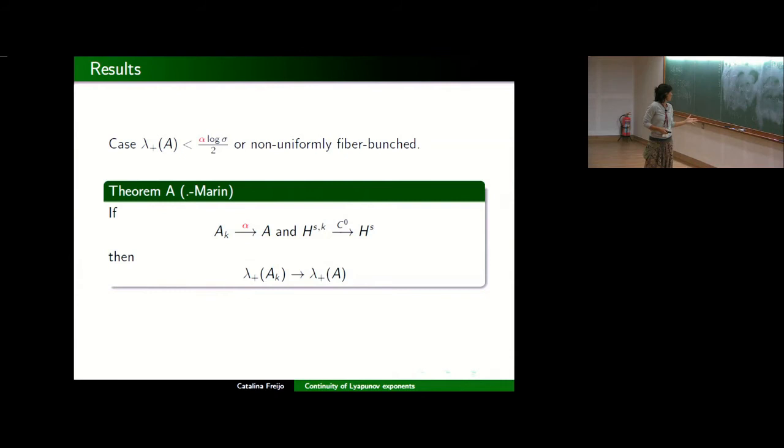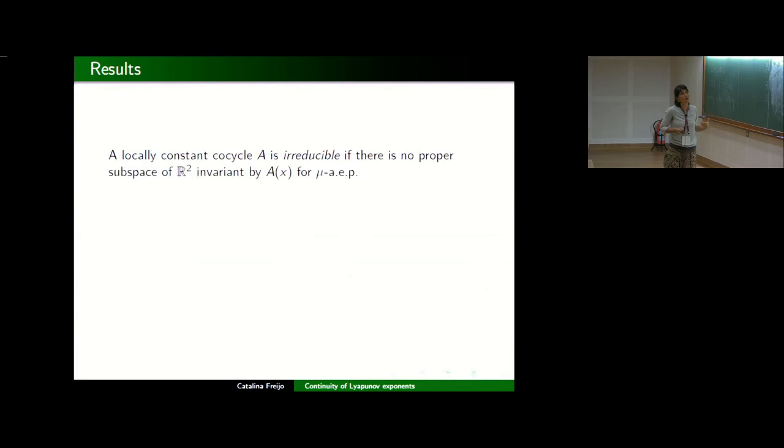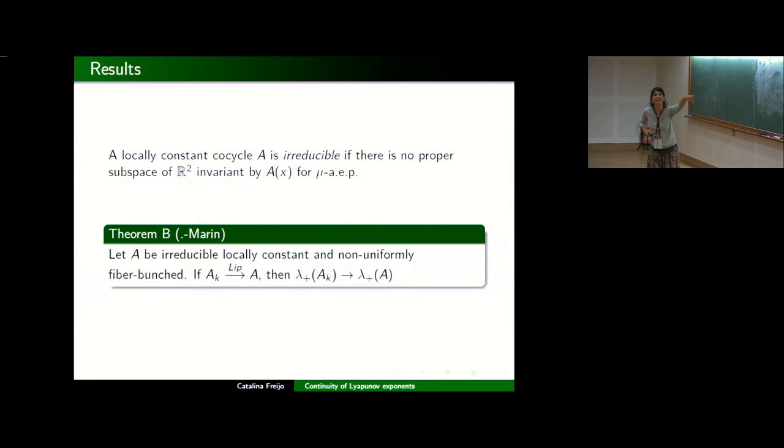Here you see that also work with Hölder, but the bunching condition is modified. And the following question, Böcker-Viana also proved in this article that every, in the space of locally constant cocycles, every point is a continuity point. Here we see that if we make the space bigger, like all Hölder cocycles, we know that is not true. So what do we need to make any cocycle, linear cocycle, locally constant, a continuity point? That is the following. A locally constant cocycle is irreducible if there are no proper subspaces invariant by A at every point. So if we have irreducibility, if we have continuity with no need of holonomy. Thank you very much. I'm sorry.